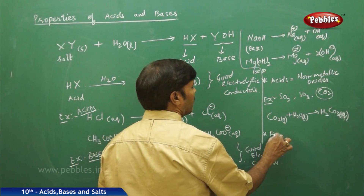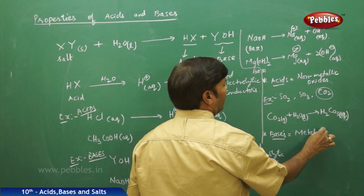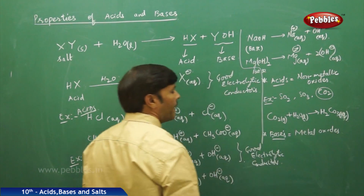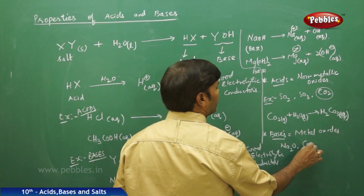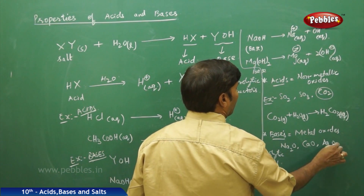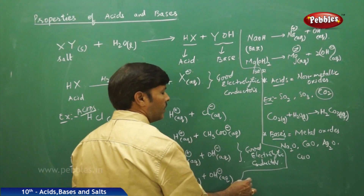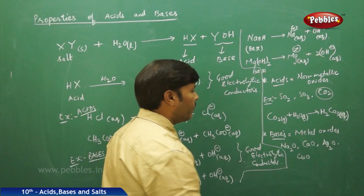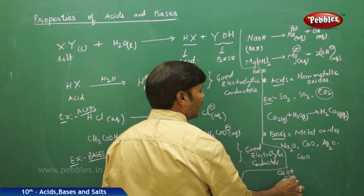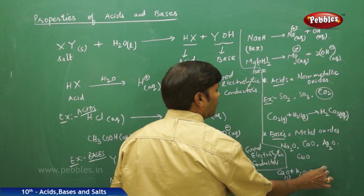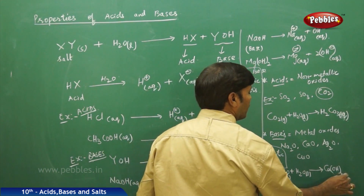Likewise, for bases, all metal oxides are basic in nature. For example, sodium oxide, calcium oxide, Ag2O (silver oxide), and cupric oxide are all metal oxides. If you take calcium oxide, which is a solid, and dissolve it in water, it gives a base — calcium hydroxide (aqueous). So calcium hydroxide is a base.